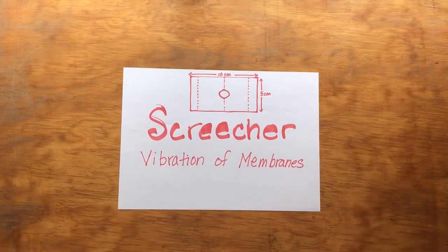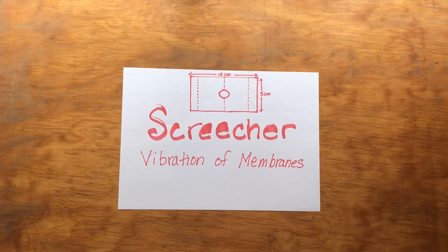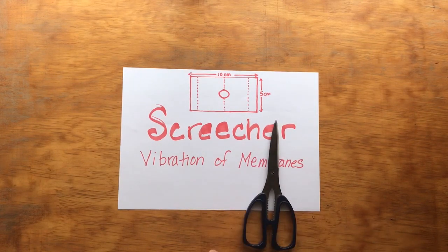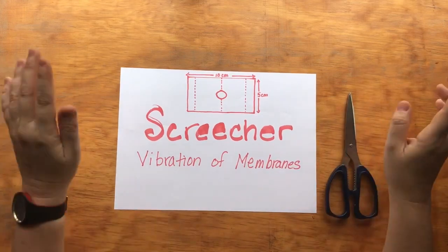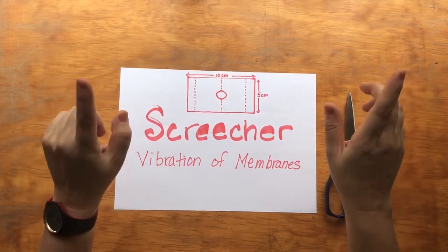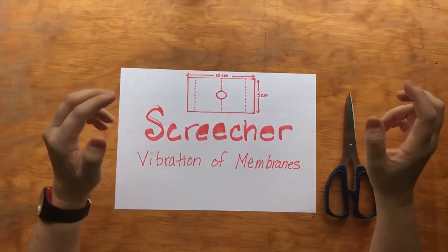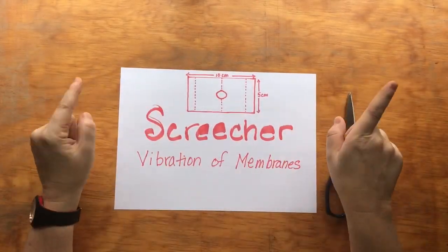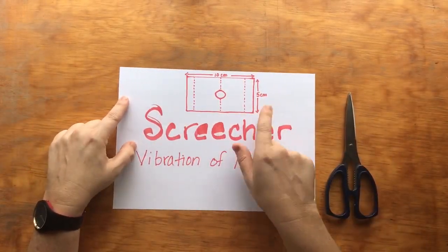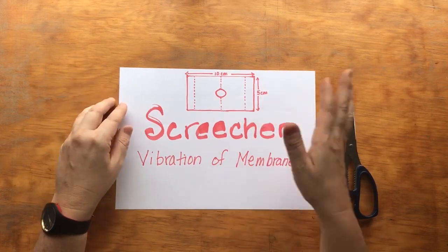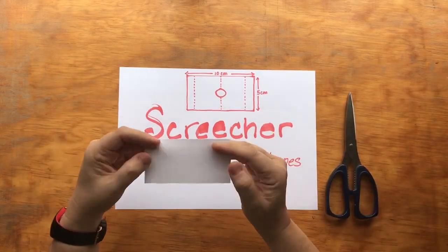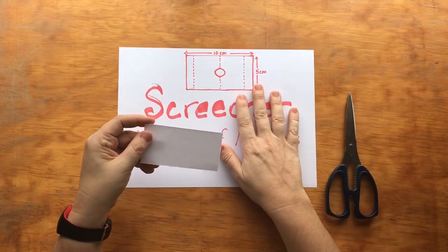So basically what you need is some paper and some scissors — that's really all you need, plus the students of course. What you want to do is cut out a piece of paper. You can pre-cut these if you feel the age group is too young or they make too much of a mess. Cut out a rectangle that's about 10 centimeters by 5 centimeters, and you'll end up with a piece of paper that looks something like this.